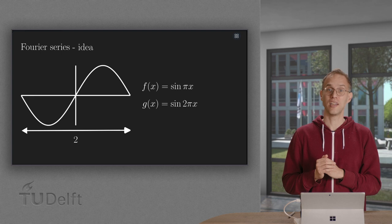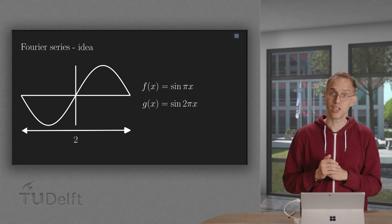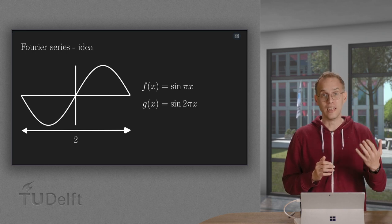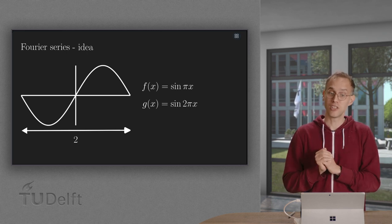If we can write f(x) as such a linear combination, then this linear combination is called the Fourier series of f. In this video we will make this a bit more precise, so let us get started.